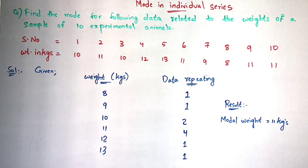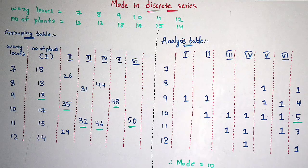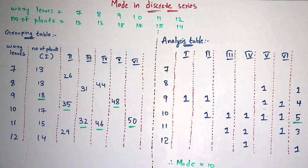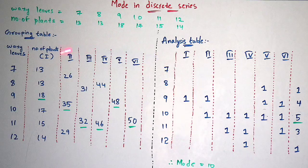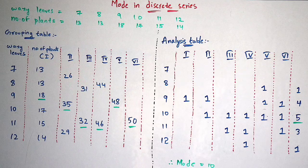Now let us discuss about mode in discrete series. Before entering into this, you have to know how the grouping table and analysis table are formed. The analysis table is formed from the grouping table, so firstly you have to know how the grouping table is formed. Once the grouping table has been formed, it will be easy to calculate the analysis table.